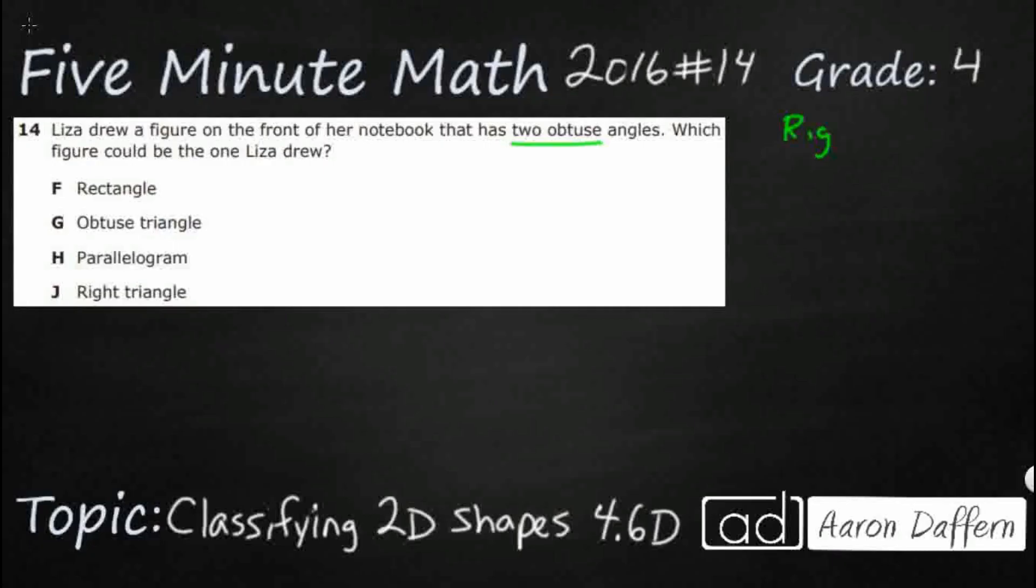We're going to start not with an obtuse angle, but with a right angle. A right angle has perpendicular lines here and is 90 degrees. Sometimes we'll refer to it as a 90-degree angle because that's its measurement. We measure angles with degrees, or sometimes we'll call it a square corner because it's what you would expect on the corner of a square or a rectangle. It's got one line that goes straight up and down, one line that goes side to side. That is a right angle, and usually you'll get a little square put inside there.